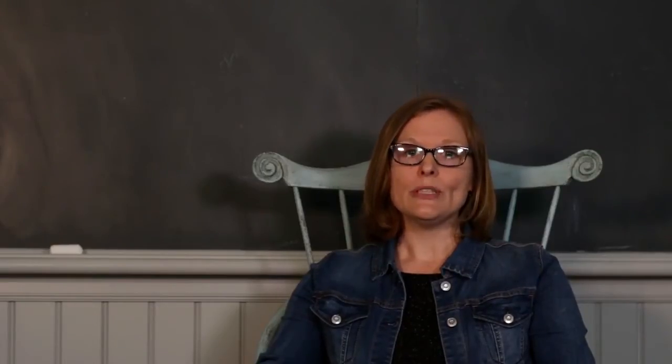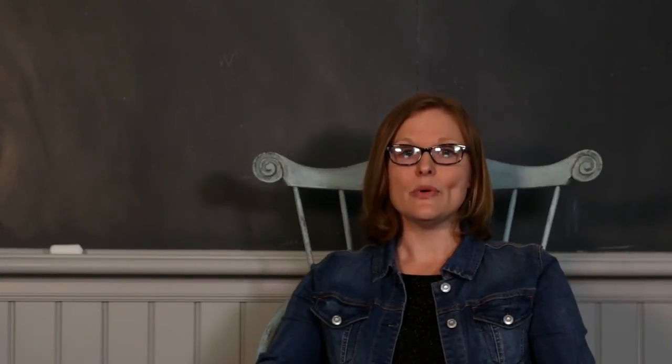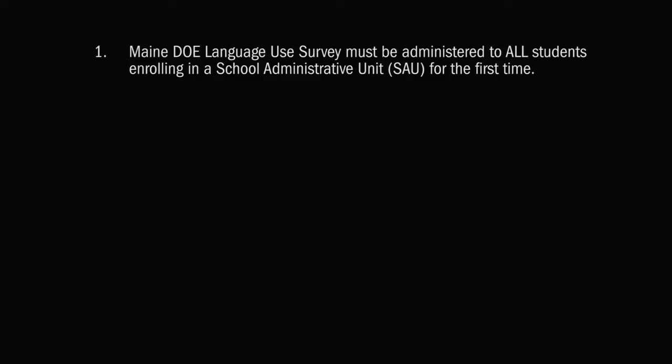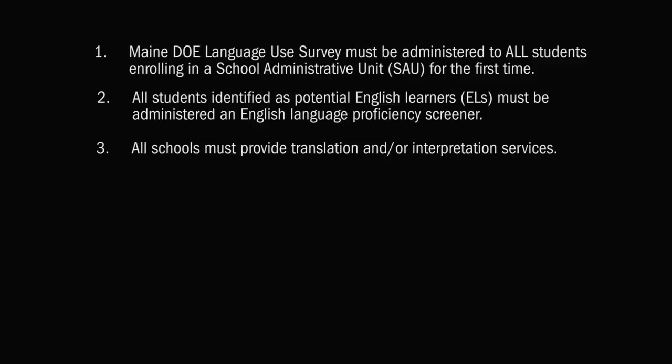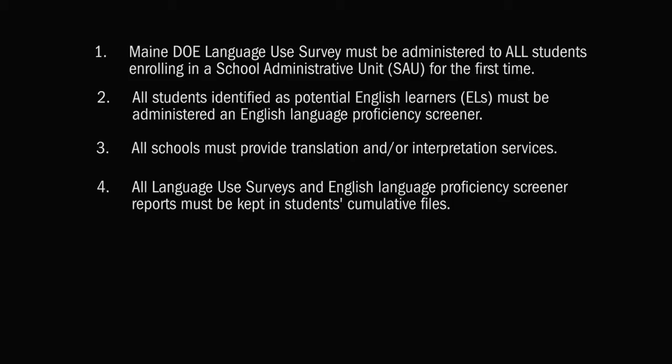These are just a few examples that we hope will help clarify Maine DOE's statewide English learner identification policy. To summarize the key points highlighted in this video: the Maine DOE Language Use Survey must be administered as part of the registration packet for all students enrolling in an SAU for the first time. All students identified as potential English learners through the Language Use Survey must be administered an English Language Proficiency Screener. The resource guide entitled 'Serving Maine's English Learners' will give you more details. All schools must provide translation and/or interpretation services as needed to assist a family in completing the Language Use Survey and in enrolling. All Language Use Surveys and English Language Proficiency Screener reports must be kept in students' cumulative files.